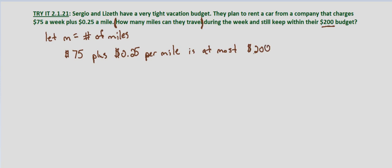Now we translate that into an inequality. I'm going to put the 25 cents per mile up front because that's where the variable is going to be. Per mile, so it's 0.25 times M, since we let M be the number of miles.